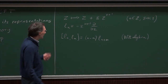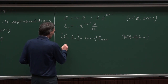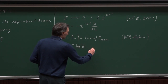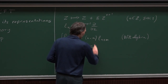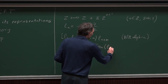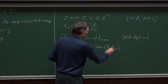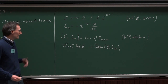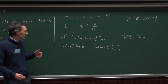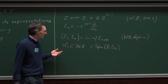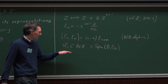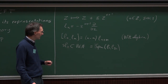The Witt algebra includes in particular an SL(2) subalgebra generated by the three generators L_0, L_1, L_{−1}. This subalgebra can be identified with global conformal transformations, while the full Witt algebra gives local conformal symmetry. The finite global conformal transformations act as Z goes to (AZ + B)/(CZ + D), where AD − BC ≠ 0 and A, B, C, D belong to ℂ.